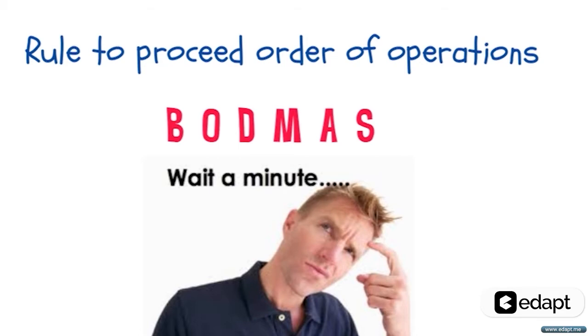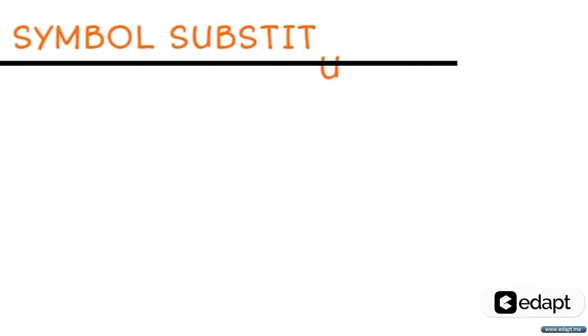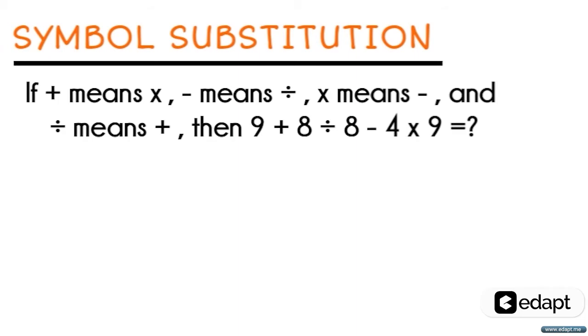So now let us start with the symbol substitution method. To understand these concepts better, let us take an example. If the addition symbol means multiplication, subtraction means division, multiplication means subtraction, and division means addition, what is 9 plus 8 divided by 8 minus 4 into 9?